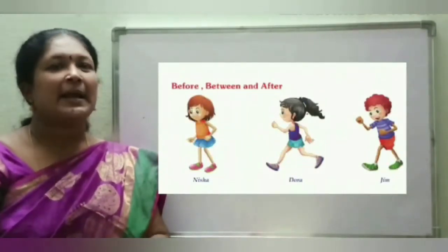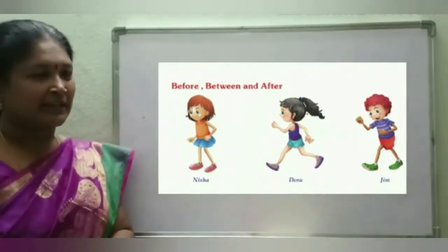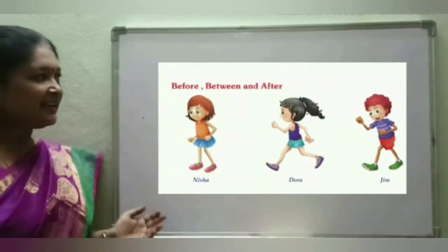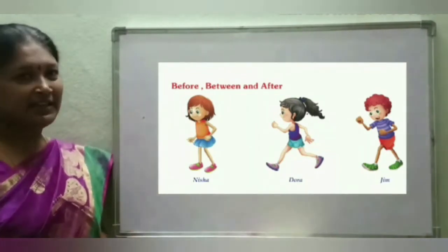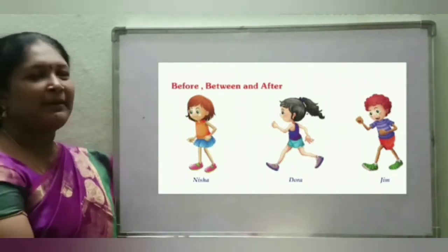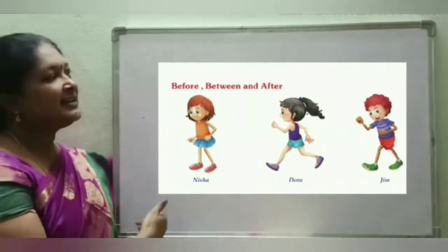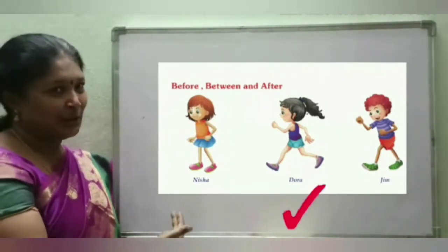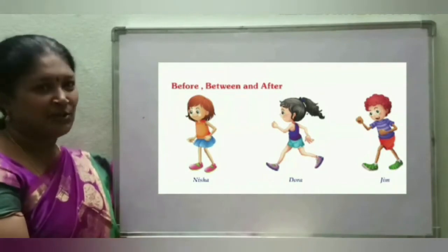Now the topic is before numbers, between numbers and after numbers. Here how many students are there? 3 students are there. What are those names? Nisha, Dora and Jim. The 3 students are moving one after another. Who is there before Dora? Nisha is there. And who is there after Dora? Jim is there after Dora. Who is there between Nisha and Jim? Dora is there between Nisha and Jim. So these are before, between and after.